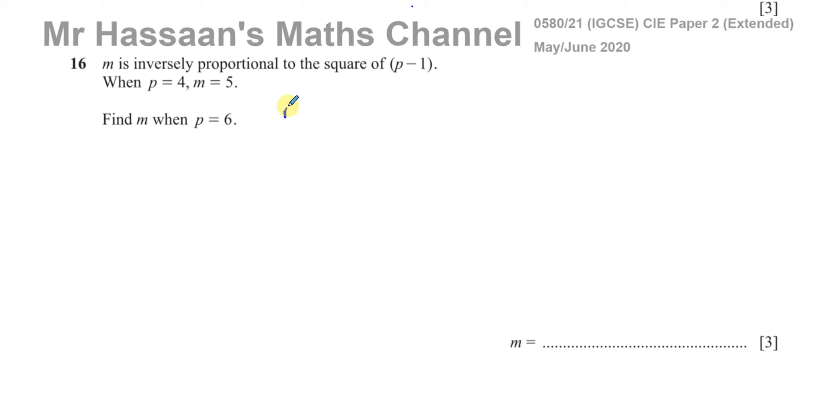So m is inversely proportional to, that means m is equal to some constant divided by. If it says directly proportional to, then you say m equals some constant multiplied by. But inversely, m equals some constant divided by. And then whatever description comes next, you write down to the square of p minus 1. So p minus 1 squared. That's how you set it up.